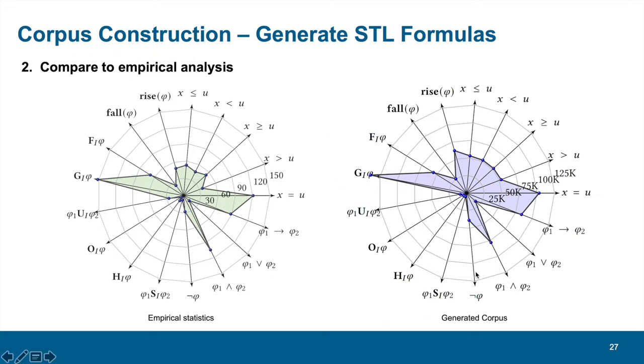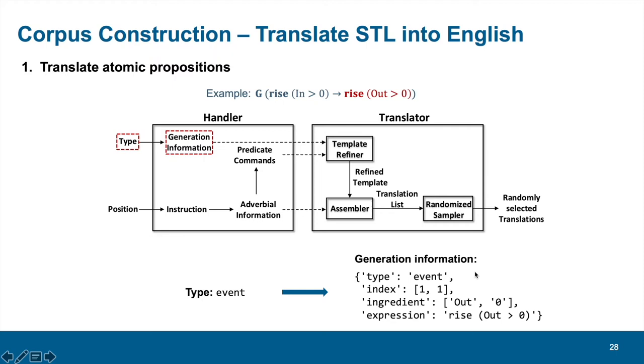When an STL formula is generated, the next step is to translate it into multiple English sentences. Here we use the postcondition in the above example to show how the translation of atomic propositions are processed. Generally, the translation procedure can be divided into a handler and a translator.